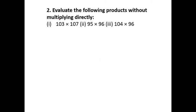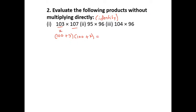Next: evaluate the following products without multiplying directly. Generally students multiply directly, but instead we must use the identities. To know which identity to use, look at the numbers: 103 and 107 — we can write these as (100 + 3) and (100 + 7), then apply the (x + a)(x + b) identity.